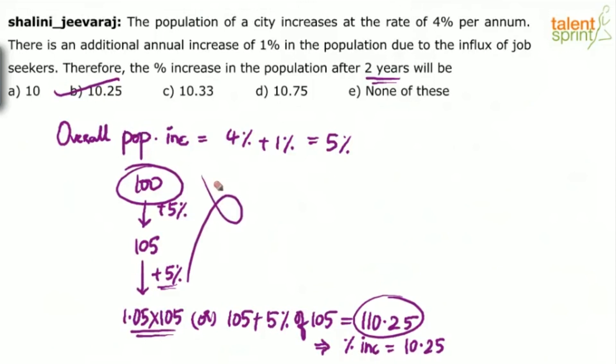This is not wrong, but this is lengthy. Why do you have to play with numbers here? Simply use the effective percentage concept. You know that the effective increase in the population will be a plus b plus ab by 100. So 5 plus 5 plus 5 into 5 by 100.